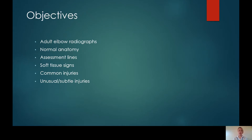We won't be looking at paediatric elbows — this will be covered in a separate talk — and we also won't be discussing degenerative changes or other pathologies. We'll look at normal anatomy, some assessment lines that you need to be familiar with when assessing adult elbow radiographs, normal and abnormal soft tissue signs, as well as common and more unusual injuries.